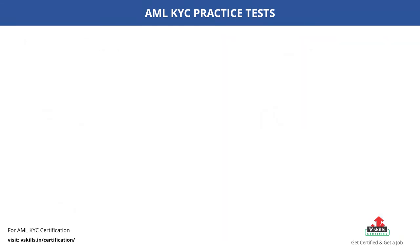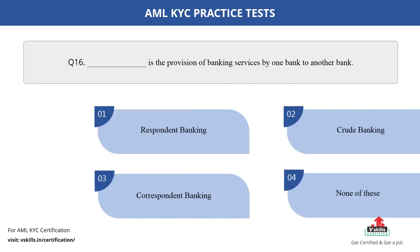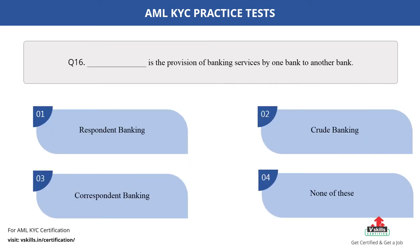Question number 16. Dash is the provision of banking services by one bank to another bank. Fill in the blank. The options are: A. Respondent banking; B. Crude banking; C. Correspondent banking; D. None of these. The correct answer is option C.